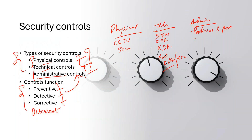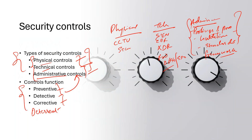Administrative controls are the type of controls that guide you toward something — policies, procedures, guidelines, and frameworks. Whatever framework or standard you have adopted, those things fall largely under administrative controls. Can someone explain what a preventive control is, a detective control, a corrective control, and a deterrent?